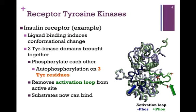What happens on the intracellular portion? In that case also, the ligand binding induces a conformational change. Those two tyrosine kinase domains that are part of those beta subunits are brought together, close enough in proximity that they can phosphorylate each other. In other words, one beta subunit will phosphorylate the other and then vice versa. This is referred to as autophosphorylation because the receptor is phosphorylating itself. It is a tyrosine kinase, so it will phosphorylate on tyrosine residues. There are three tyrosine residues within what's referred to as the activation loop, and that's true for each of those two tyrosine kinase domains.